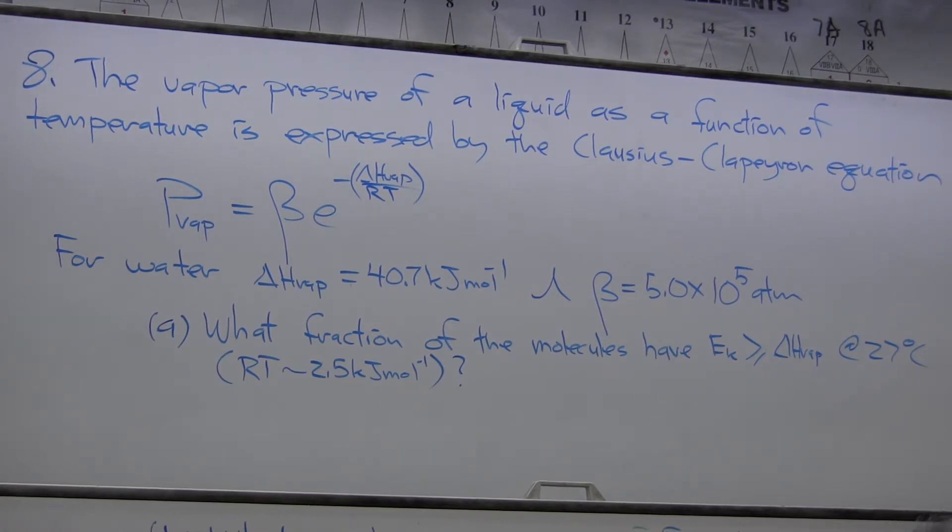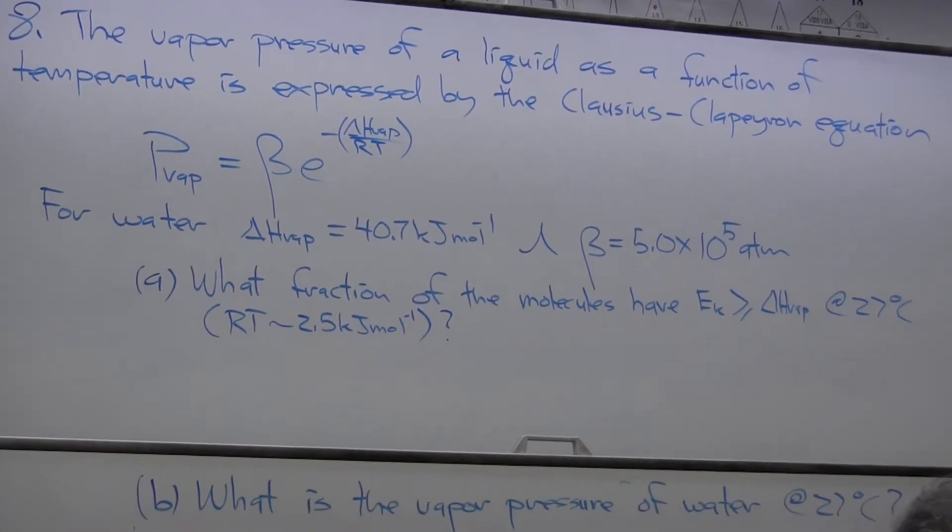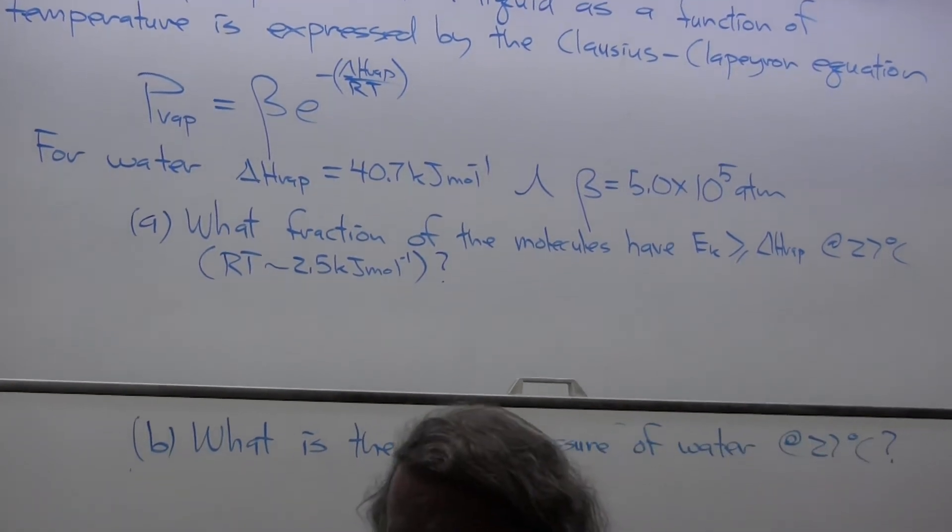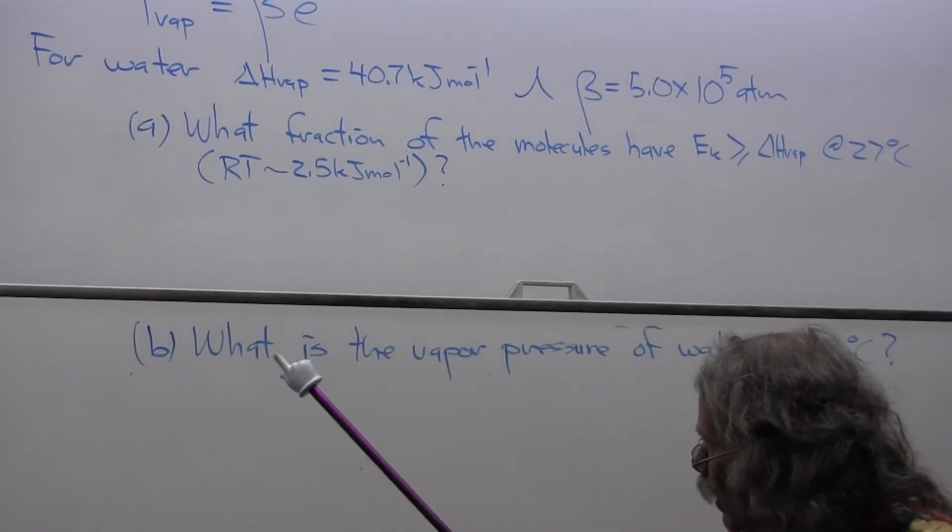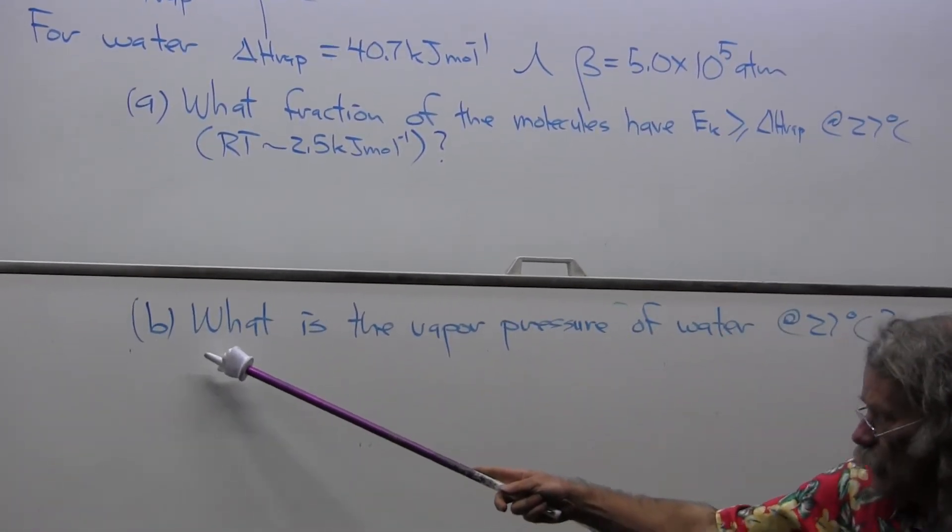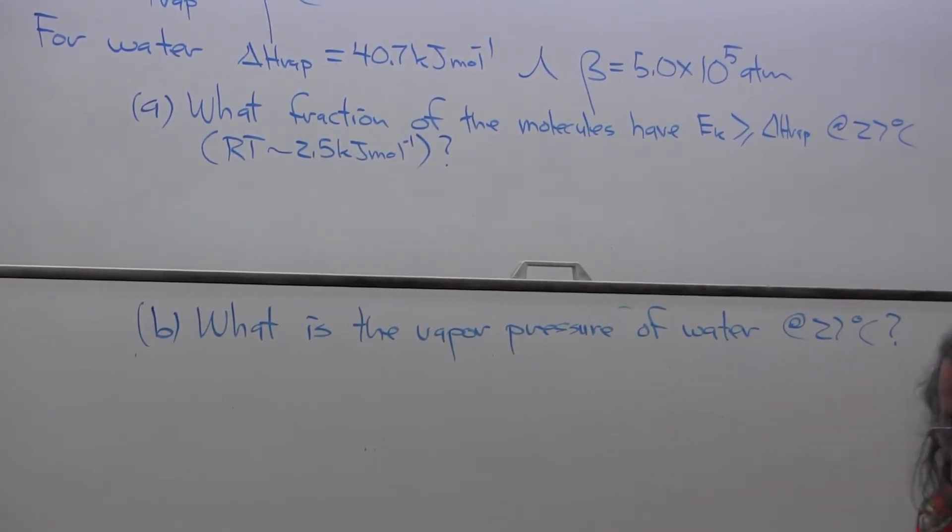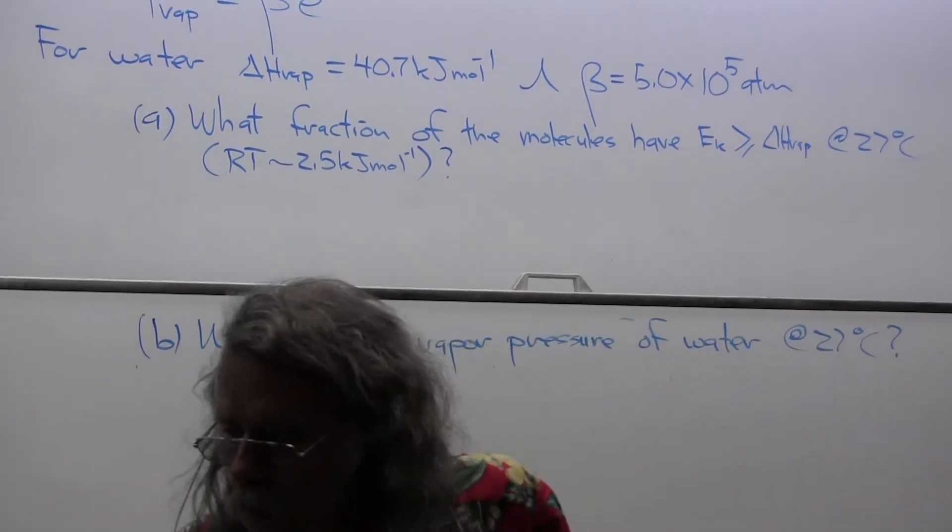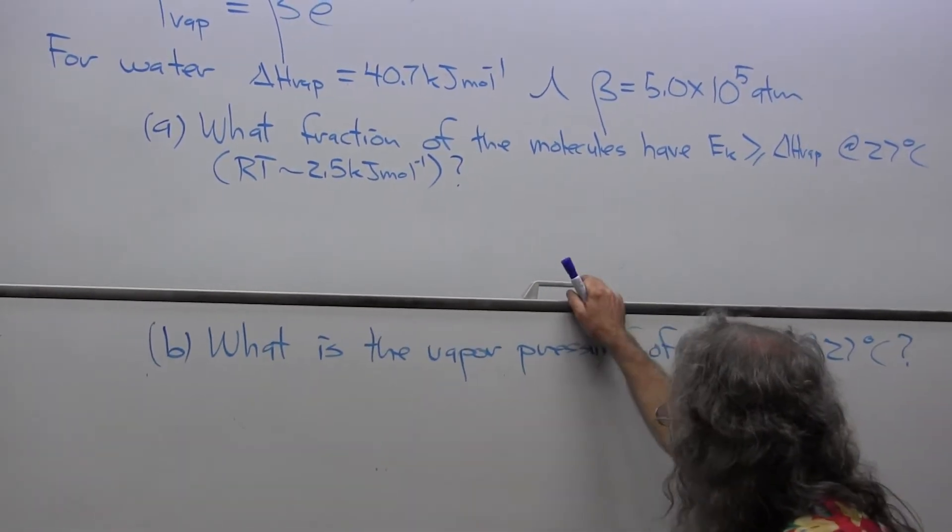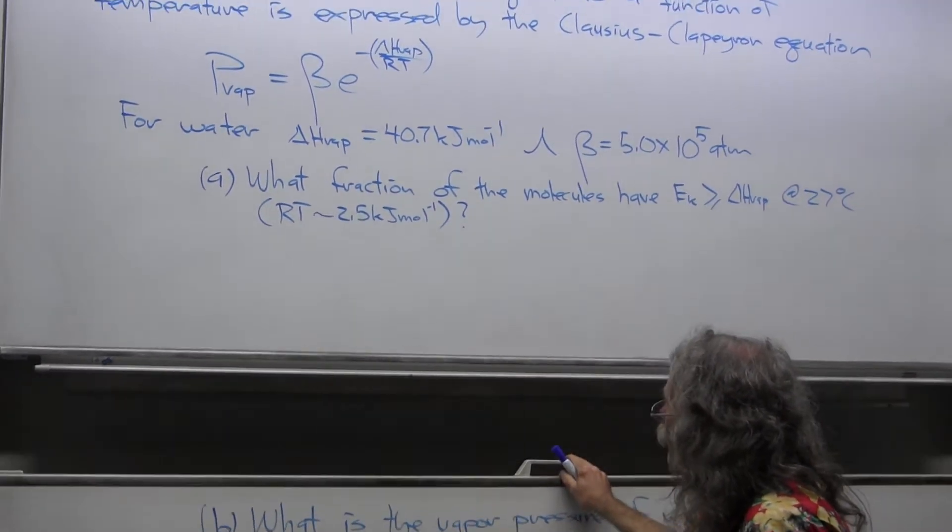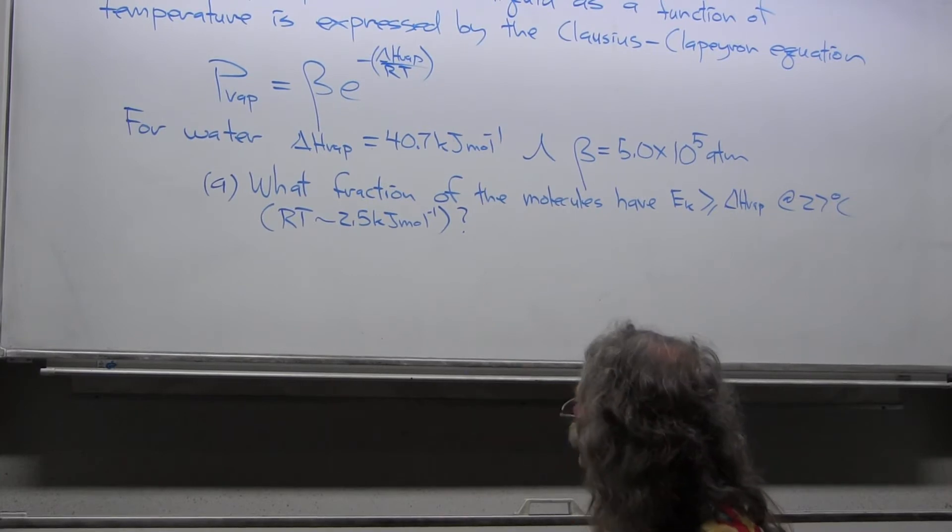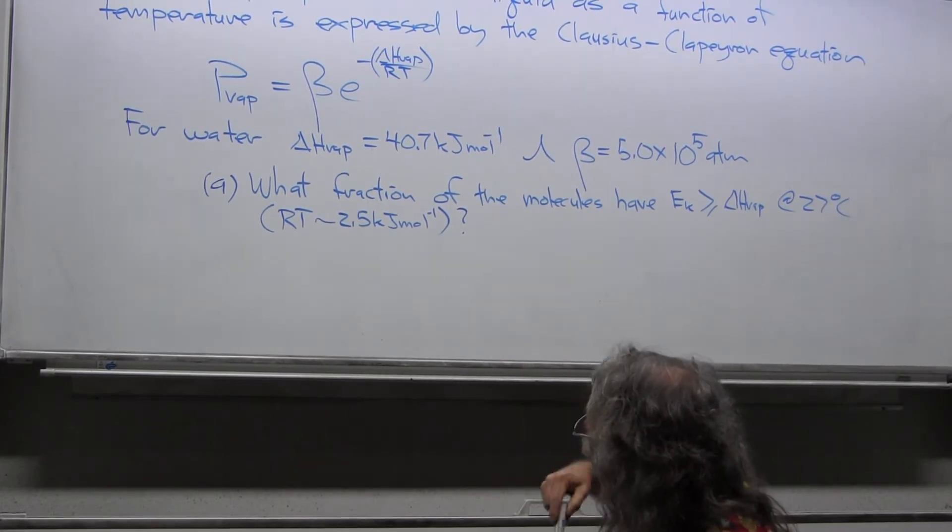This will give us simplification. Now we're going to get to apply and practice some of the skills. And then part B is: what is the vapor pressure of water at 27 degrees Celsius? For part A, I simply have to find the term in the exponent.